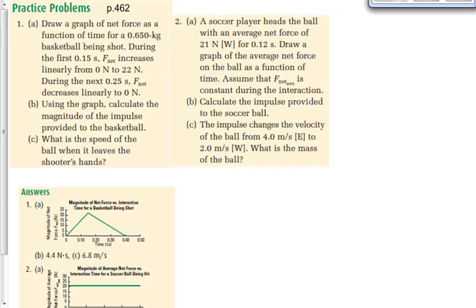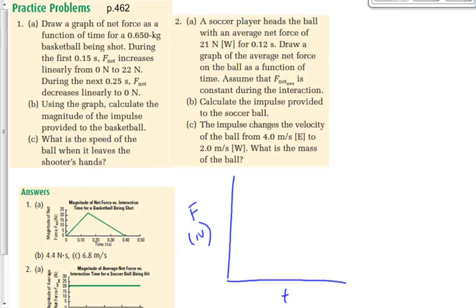The question says: draw a graph of the net force as a function of time for a 0.650-kilogram basketball being shot. During the first 0.15 seconds, the force increases from 0 to 22 newtons. So here's my graph — force on the y-axis in newtons, time on the x-axis in seconds. We're going during the first 0.15 seconds from 0 to 22 newtons.